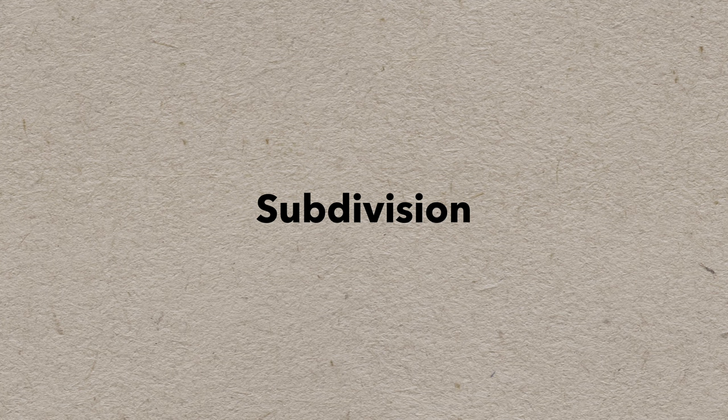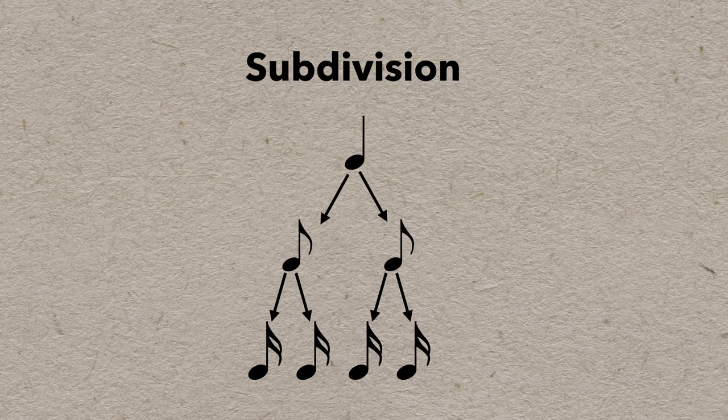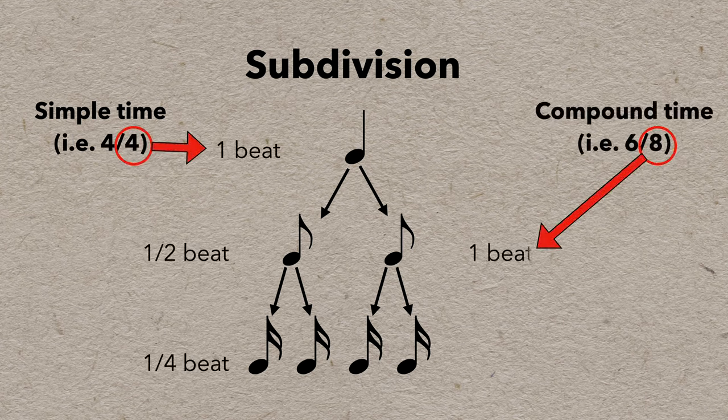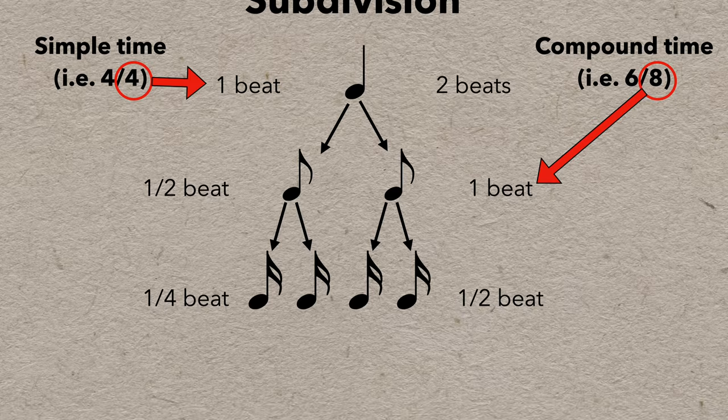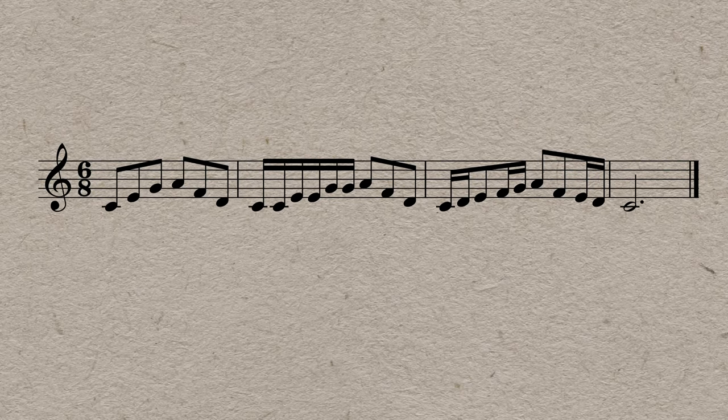Subdividing in compound time works similarly to what we've seen previously. There are two eighths to a quarter and two sixteenths to an eighth. But the counting is a bit different because instead of counting the quarter, you're counting the eighth as the base unit of time. So the quarter note is two beats long, and the sixteenth note is half a beat. In simple time, eighth notes are half a beat and counted one and two and. But in compound time, it's the sixteenths that are counted that way.